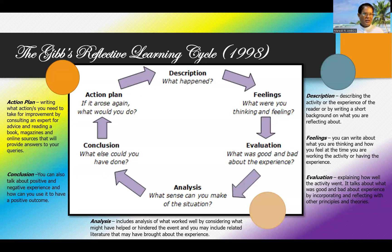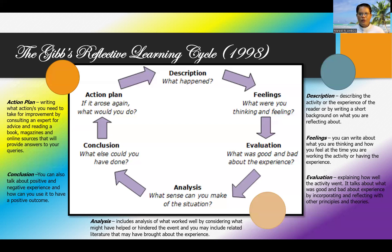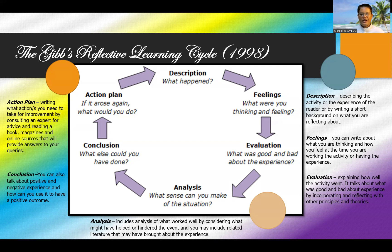Let's discuss Gibbs' Reflective Learning Cycle from 1988 — a very useful learning cycle. The first stage is description: what happened? You describe the activity or experience by writing a short background about what you are reflecting on. The second stage is feelings: what were you thinking and feeling at the time you were doing the activity or having the experience? The third stage is evaluation.